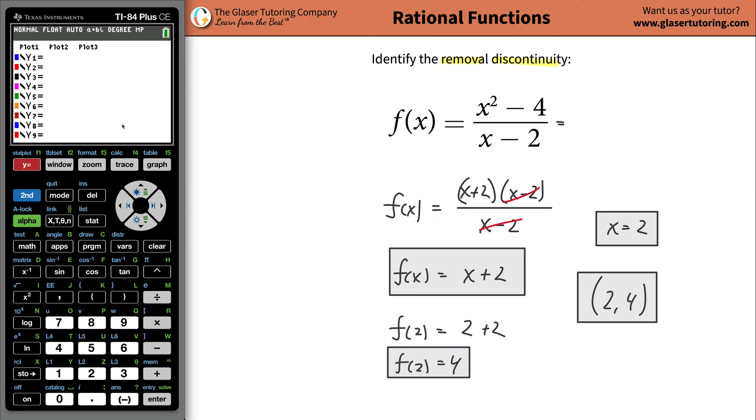So here, let's take a look. Go to your calculator now and graph the original function. Plug in x squared, x squared minus 4, then divide it by x minus 2. And then hit graph.